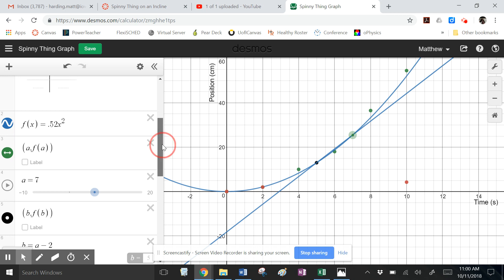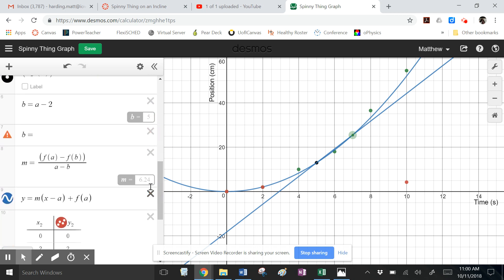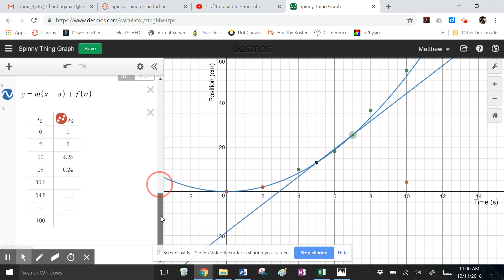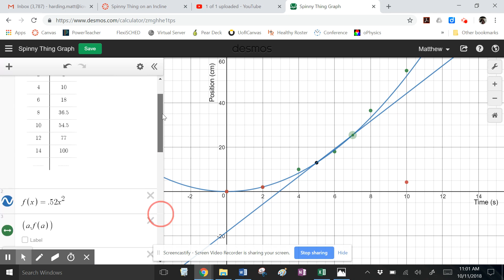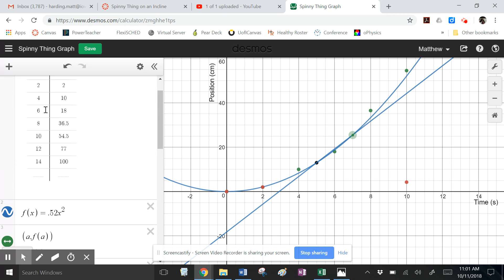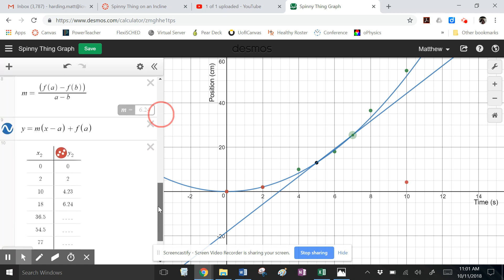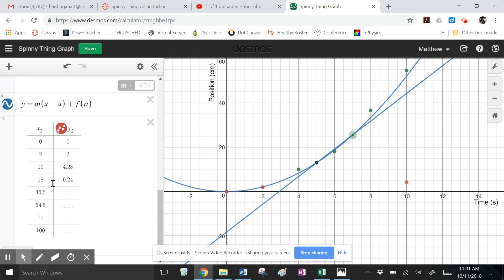So that gives me a velocity value, 6.24. And I'm marking that not at six seconds, but at 18 centimeters. That was the position that I was at at six seconds. 18 centimeters, six seconds. So down here, we're plotting the velocity at that position.